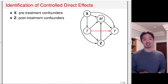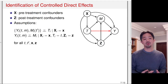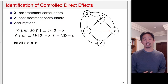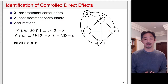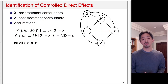The assumption that is necessary is called sequential confoundedness, and it has two conditional independence assumptions. The first assumption says that conditional on the pretreatment confounders X, the treatment is independent of the potential outcomes Y of T and M, as well as the potential values of the mediator. This assumption would be satisfied in a randomized experiment if the treatment is randomized.